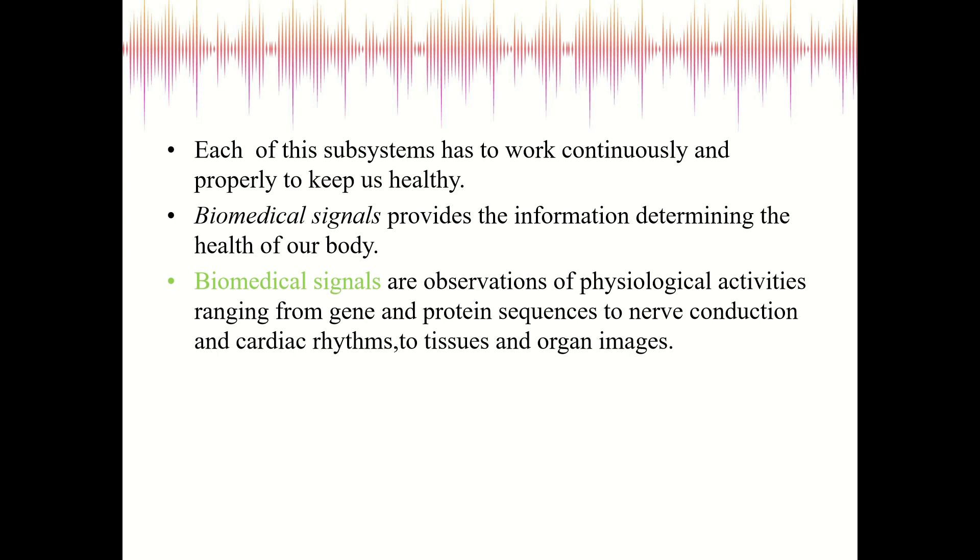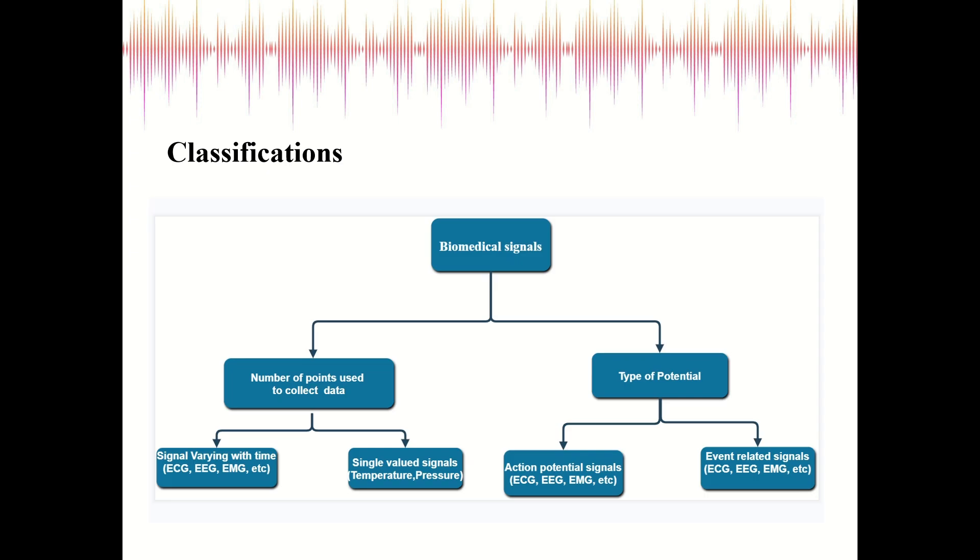Biomedical signals are classified into two types: the number of points used to collect data and the type of potential. Under the number of points used to collect data, there are signals varying with time and single valued signals. The signals varying with time include ECG (electrocardiogram), which represents the electrical activity of the human heart and consists of several waveforms.